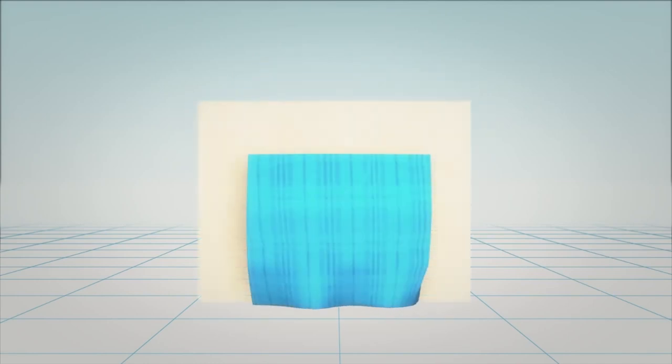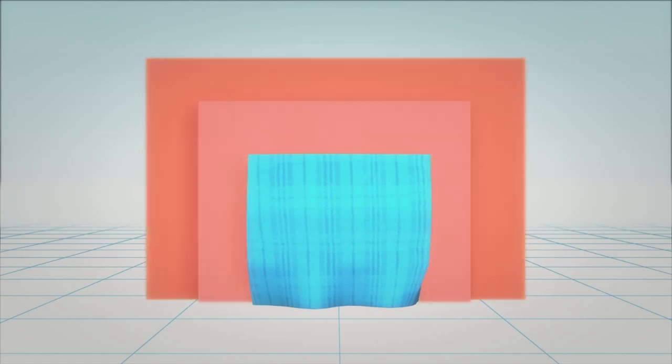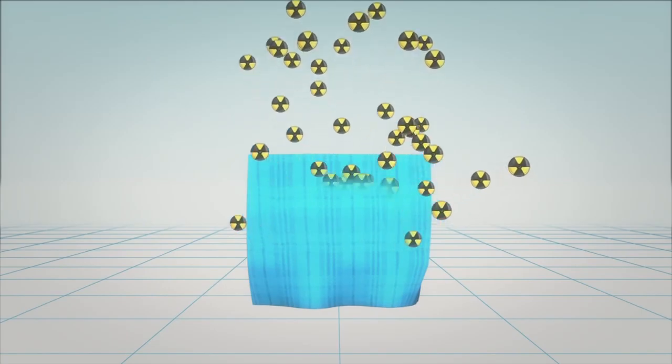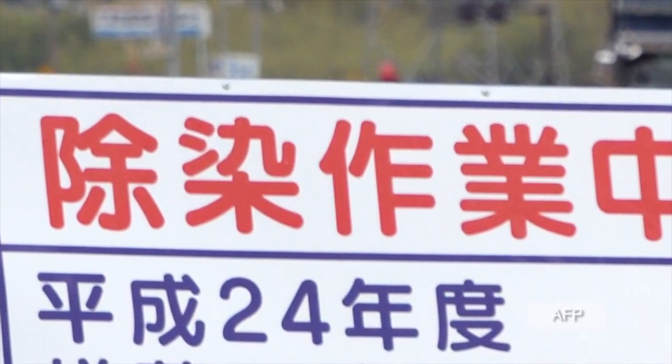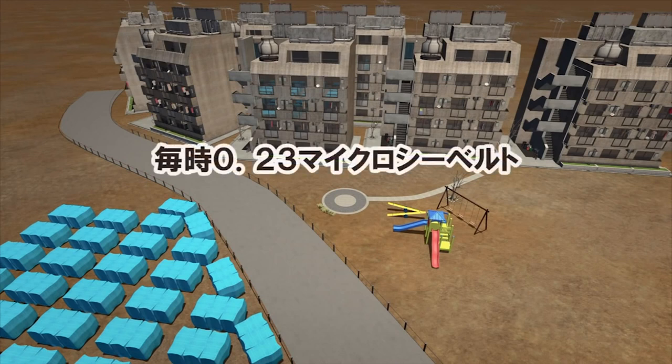According to national safety standards, the contaminated waste must be covered in mud in a fenced off area to shield passers-by from exposure. But radiation levels near the waste were found to be 10 times higher than the highest readings allowed under national safety standards.